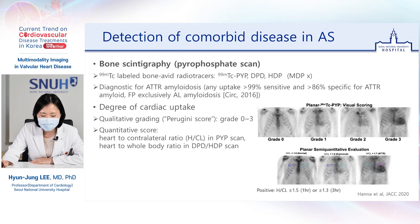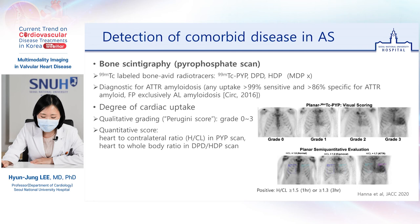Bone scintigraphy is a very accurate modality to diagnose transthyretin amyloidosis. 99Tc-labeled bone-avid radiotracers are used. Currently, three types are in use: PYP, DPD, and HDP. To note, MDP is often used in bone scans but has low sensitivity for cardiomyopathy and is not recommended for this purpose. Any cardiac uptake on bone scintigraphy was over 99% sensitive and over 86% specific for ATTR amyloidosis, with false positives almost exclusively limited to AL amyloidosis in one study. Thus, bone scintigraphy is becoming the diagnostic test of choice for ATTR amyloidosis.